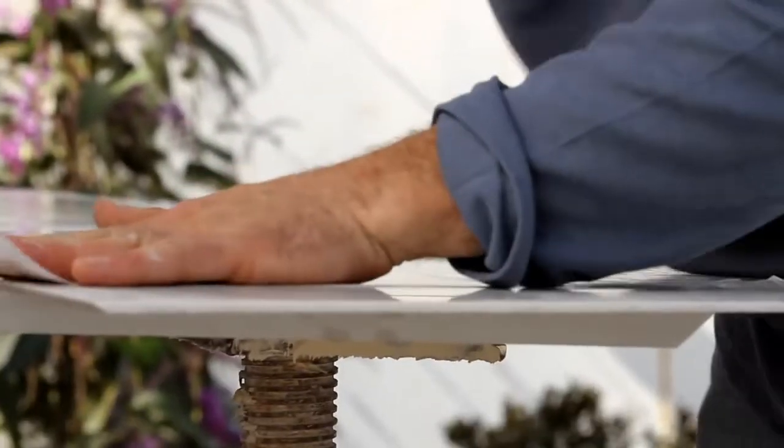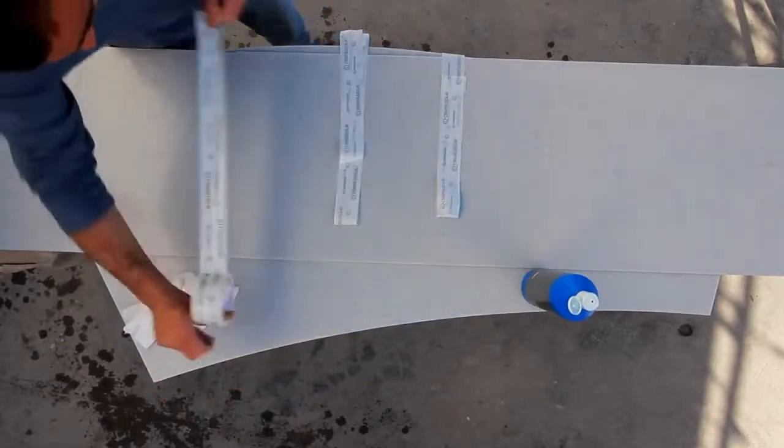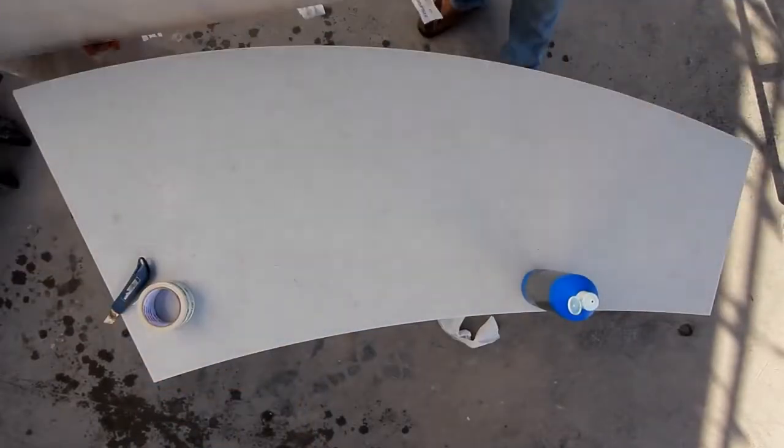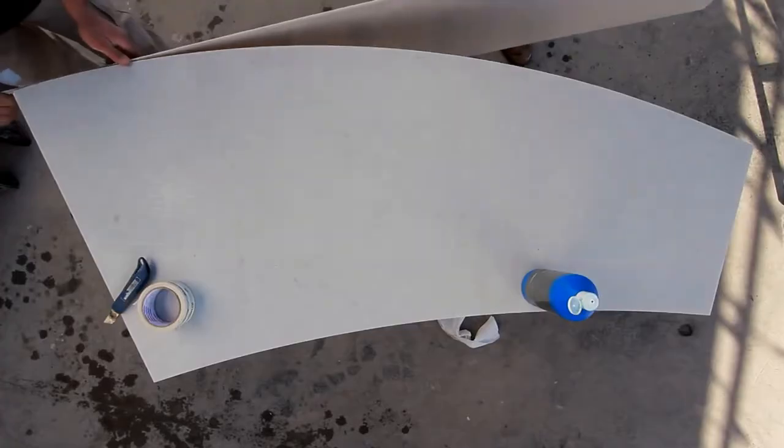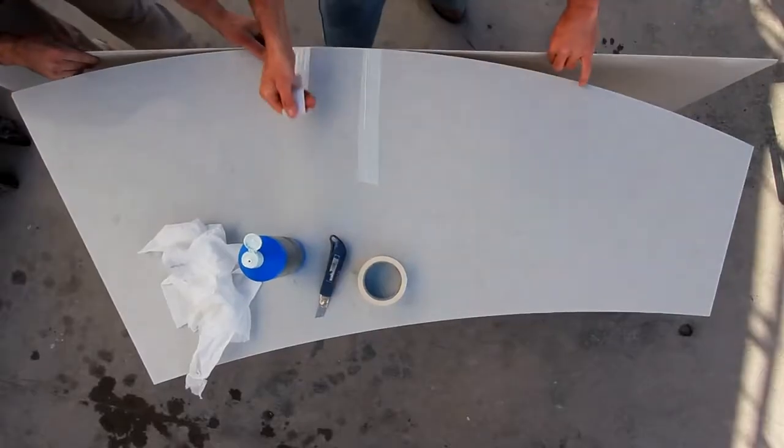Next, arrange strips of tape on the surface of the heated Caesarstone. Bend the Caesarstone around the edge of the coffee table until it takes on the correct shape and secure it with the strips of tape.